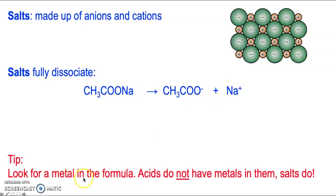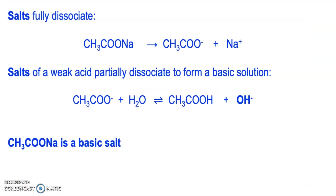So look for a metal in the formula because you won't have a metal if it's an acid. You will have a salt if you've got a metal there. So hopefully this makes sense and you can see that you're always going to have two equations whenever you're dealing with a salt.